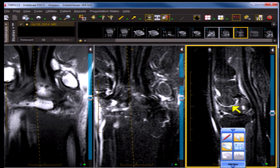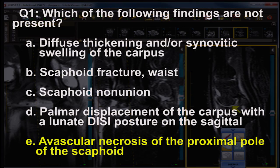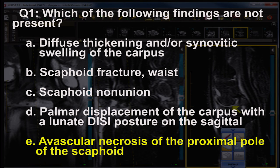This is known as dorsal intercalary segmental instability, or DISI posture. This occurs because the radioscaphocapitate ligament is injured, stretched, or torn. Returning to our questions — question number one, which findings are not present? The answer is E: avascular necrosis of the proximal pole of the scaphoid. We don't need to inject contrast or do a bone scintigram. In a chronic stage — weeks out from injury — the absence of any signal alteration in the proximal pole of the scaphoid is 97% predictive that we do not have avascular necrosis.